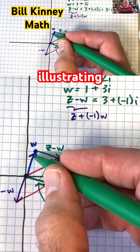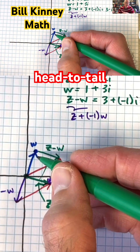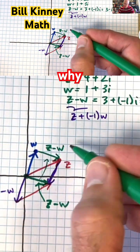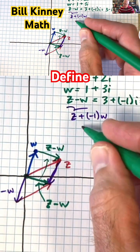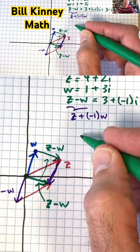Algebraically speaking, it's illustrating, in terms of the head-to-tail definition of vector addition, why we define Z minus W as Z plus negative 1 times W.